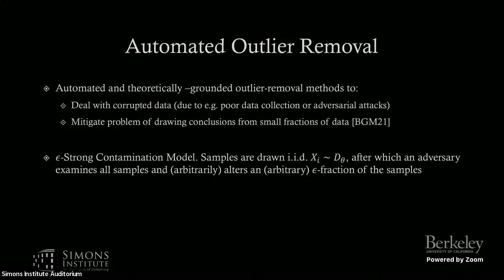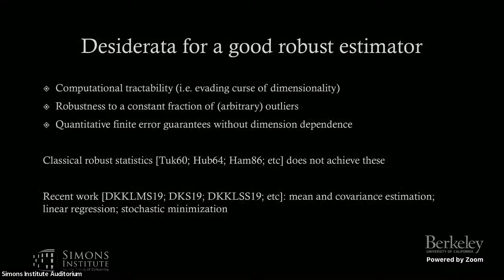This motivated us to study causal estimation within the strong contamination model, which is a very strong notion of corruption. The strong contamination model basically says: you have samples drawn IID, but then an adversary arbitrarily alters an epsilon fraction of the samples in an arbitrary manner. What we want from robust estimators is that they are computationally tractable, robust to a constant fraction of outliers — not just asymptotic theorems as epsilon goes to zero — and that we get quantitative finite error guarantees without dimension dependence, for any epsilon and any sample size. A lot of these desiderata are not achieved by classical work in robust statistics, but there has been a rich recent literature in the computational learning theory community addressing these for problems such as mean and covariance estimation, linear regression, and risk minimization.